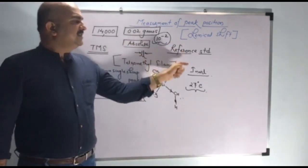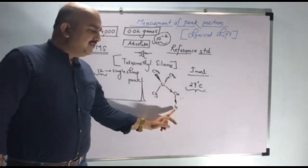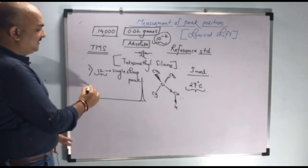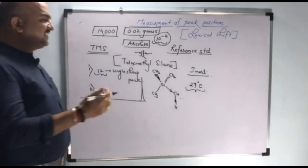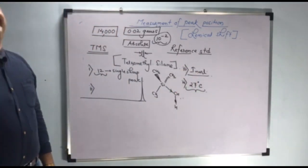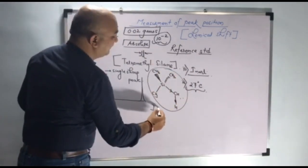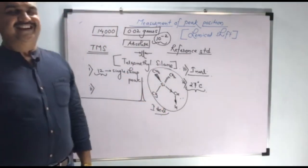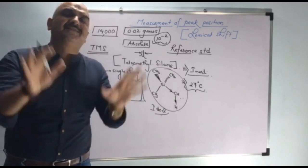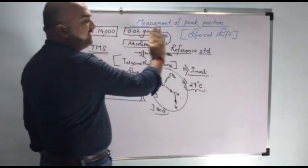First of all, we cannot measure absolute peak position, that's why we choose a reference standard, and we choose TMS. Silicon is electropositive — it increases electron density around the protons. The 12 protons are identical, giving a single sharp peak. It is strongly shielded, so the peak is on the extreme right hand side. It is inert and volatile. When you take any compound and put TMS as reference standard, you get one extra signal that appears at the extreme right hand side — that is the TMS signal.